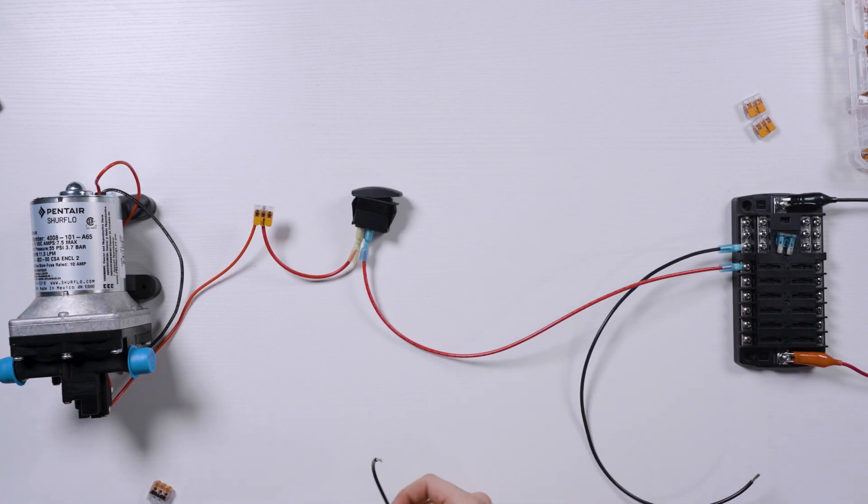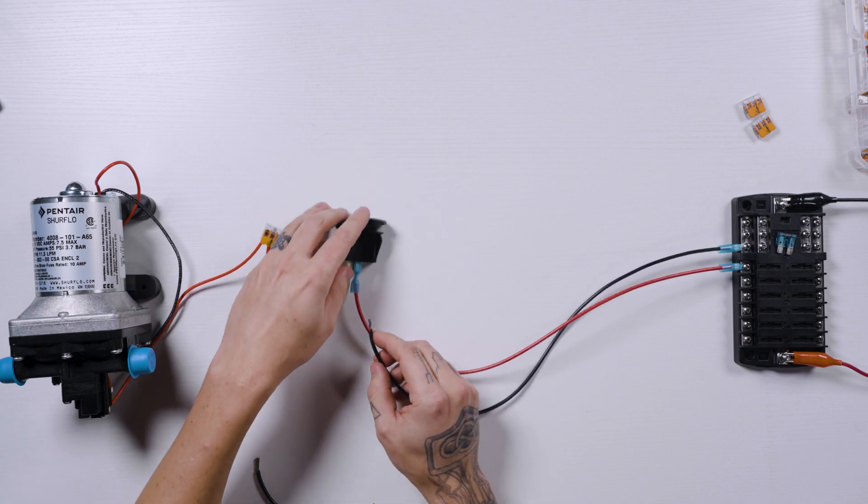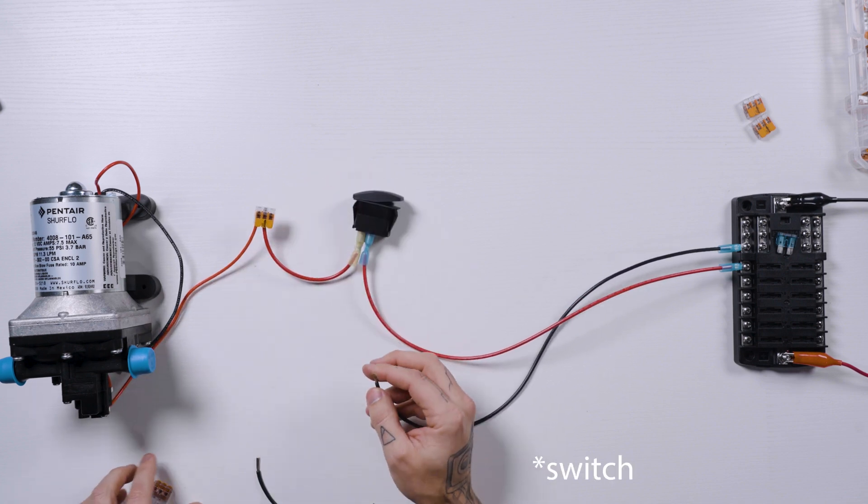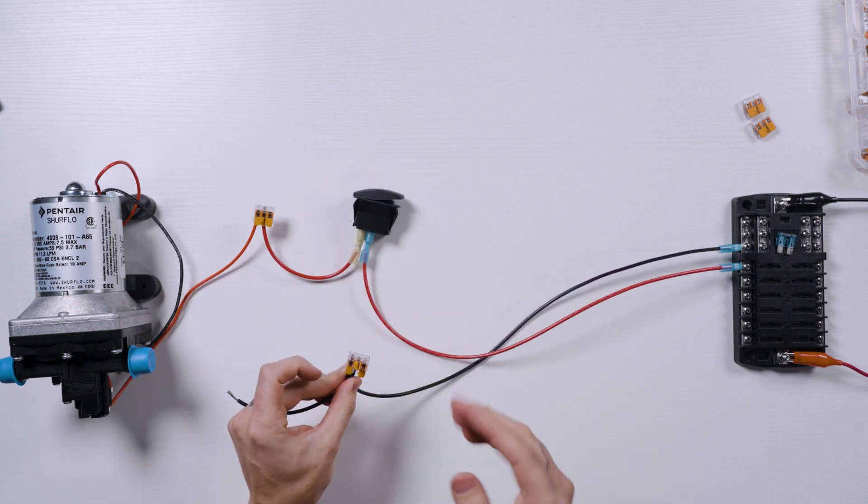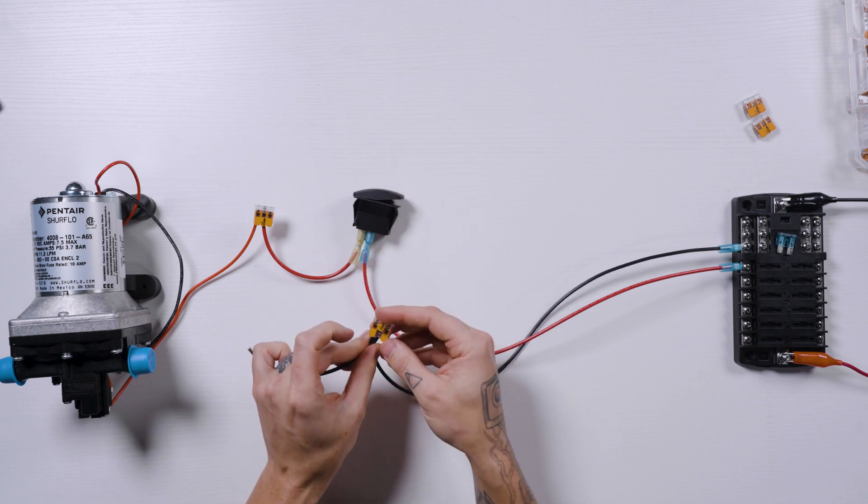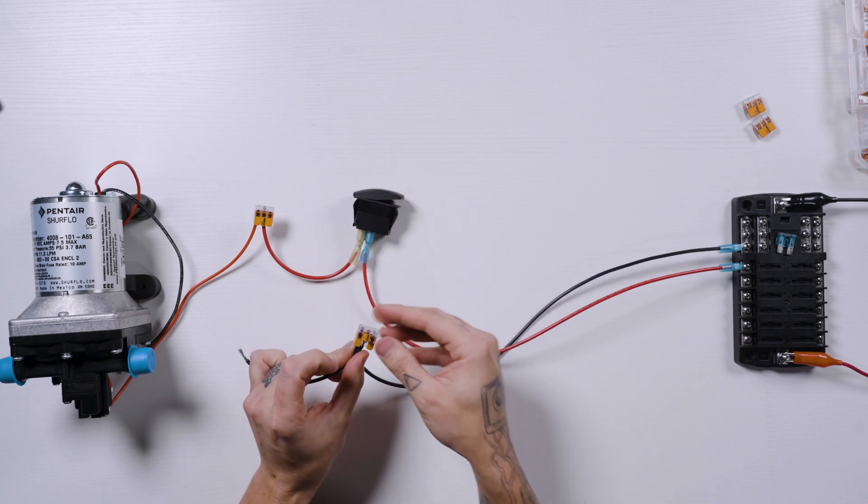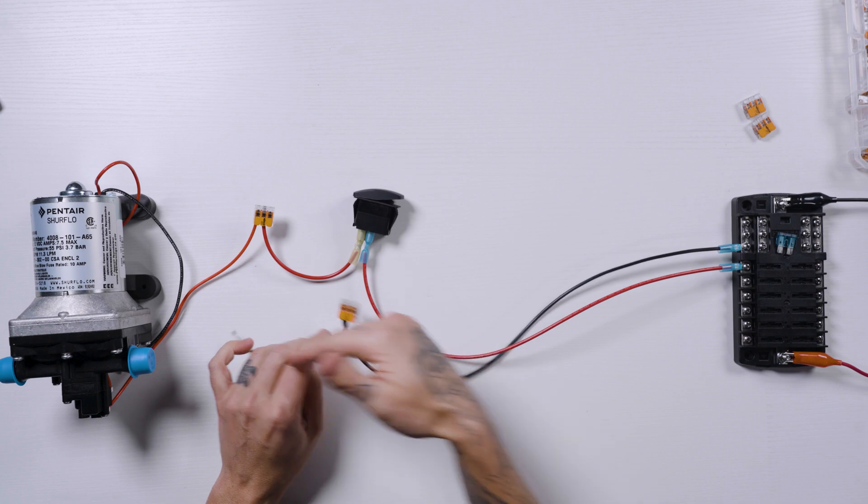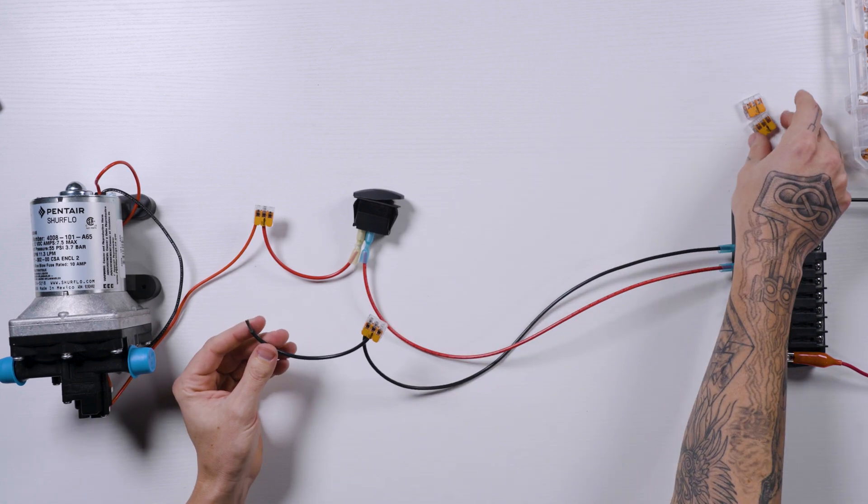For the negative wire, we're going to do pretty much the same thing. Negative wire from the fuse block to the back of the fuse location. Now this part is optional, but I like putting a lever nut right next to the switch. It just gives me a lot of flexibility in my wiring, but you don't have to put this here, and you can just wire straight through if that's what you like.